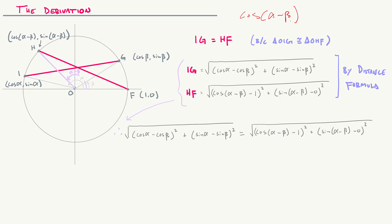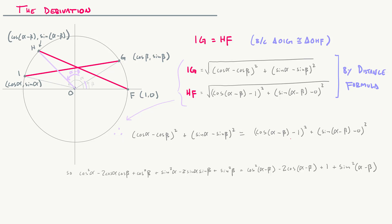The goal is to derive what cosine of alpha minus beta equals. I'm going to square both sides to get rid of the square root. Cosine alpha minus cosine beta squared gives cosine squared alpha minus 2 cosine alpha cosine beta plus cosine squared beta. Similarly, sine alpha minus sine beta squared gives sine squared alpha minus 2 sine alpha sine beta plus sine squared beta. On the right we get cosine squared of (alpha minus beta) minus 2 cosine(alpha minus beta) plus 1, plus sine squared of (alpha minus beta).